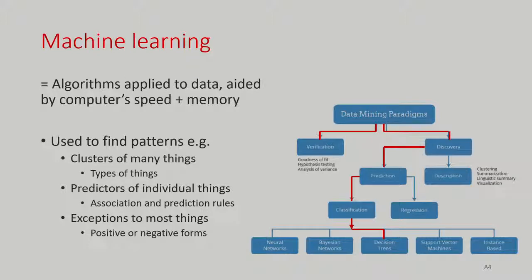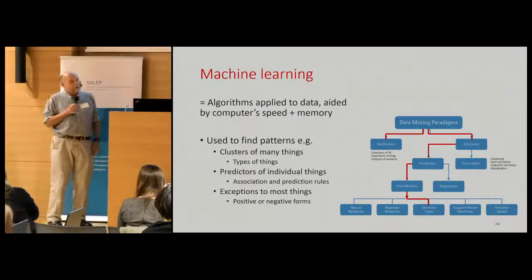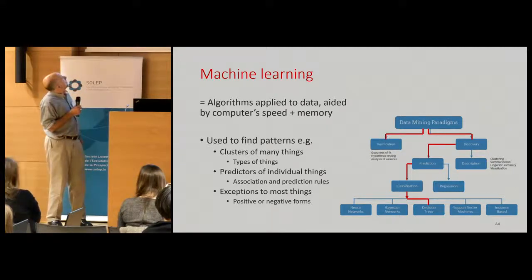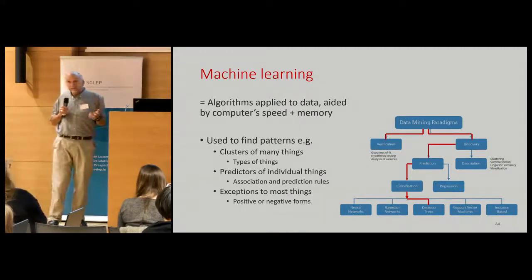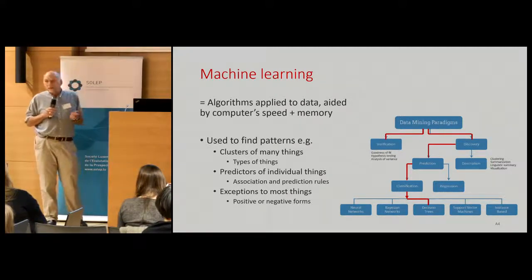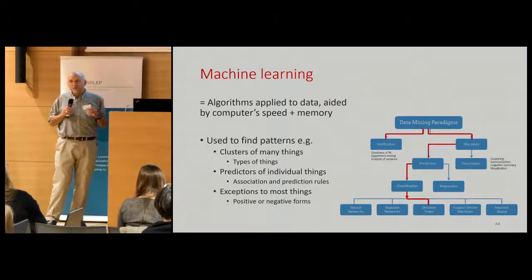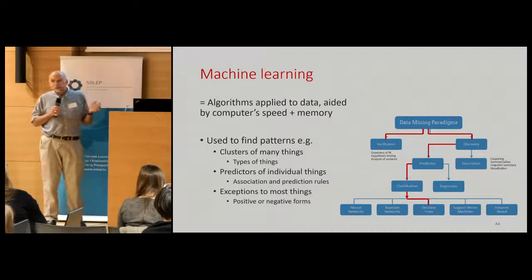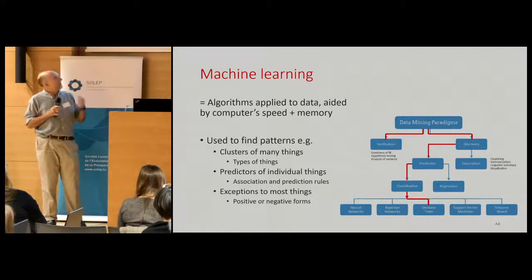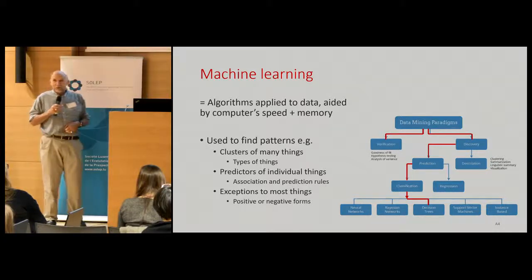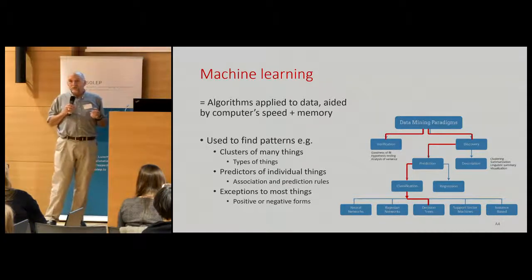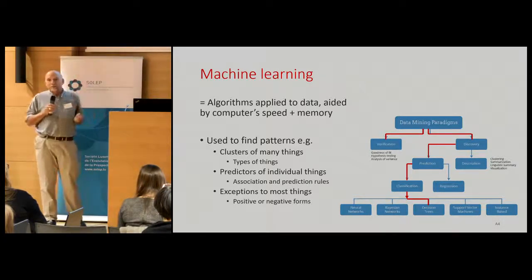I'm going to start off with some context-setting about what machine learning is all about. Machine learning is a subset of artificial intelligence. I've looked around for various definitions and if you do a Google search you'll find countless diagrams showing how they can be classified. But one definition I like is: artificial intelligence is what we'd like to have, and machine learning is what we've actually got.